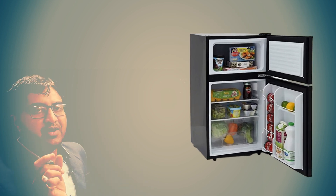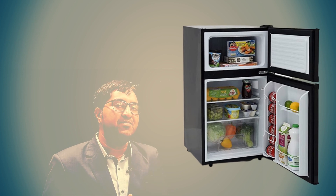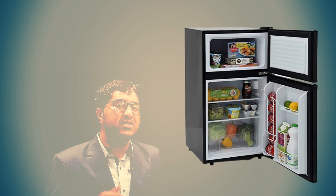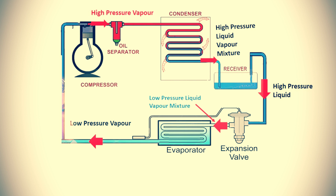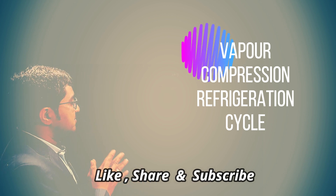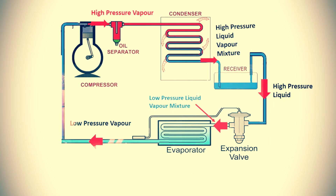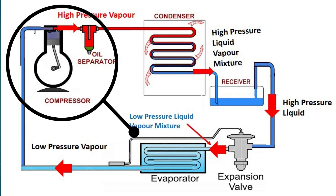First I will give you a brief idea about the working of a refrigerator, which we have already discussed in a previous lecture, so you can easily understand the need for defrosting in a freezer. These are the basic components of the refrigerator. It works on the VCR cycle — vapor compression refrigeration cycle. The basic components are: compressor, condenser, receiver, expansion valve, and evaporator.